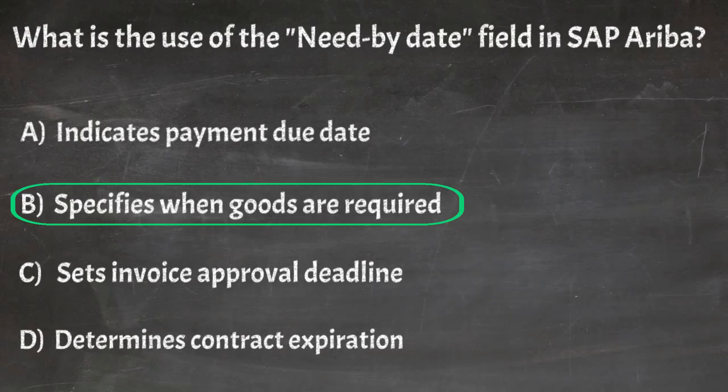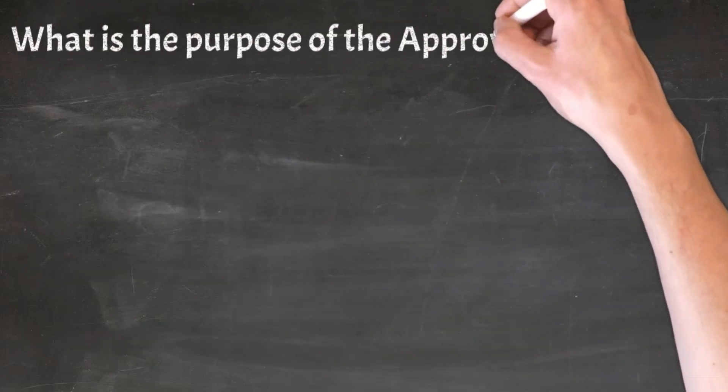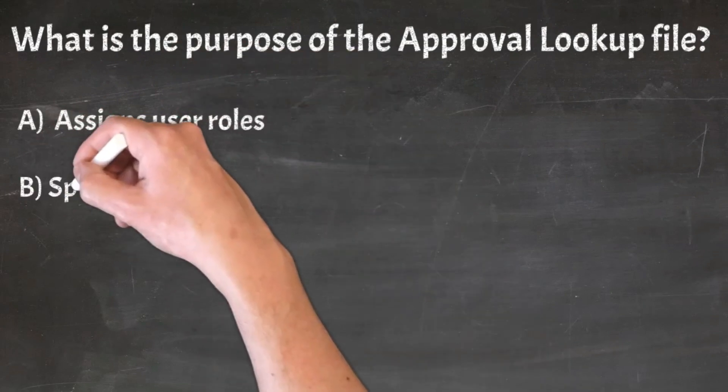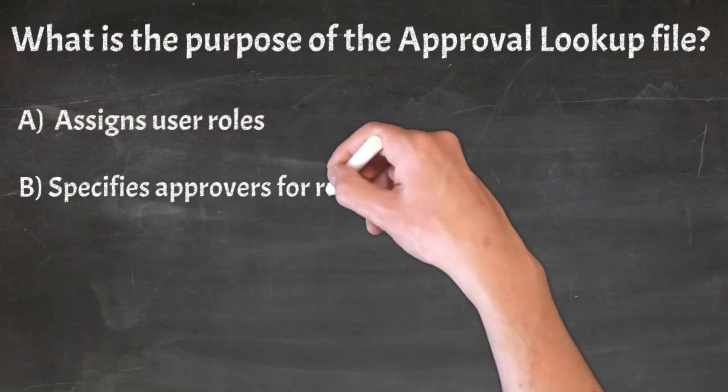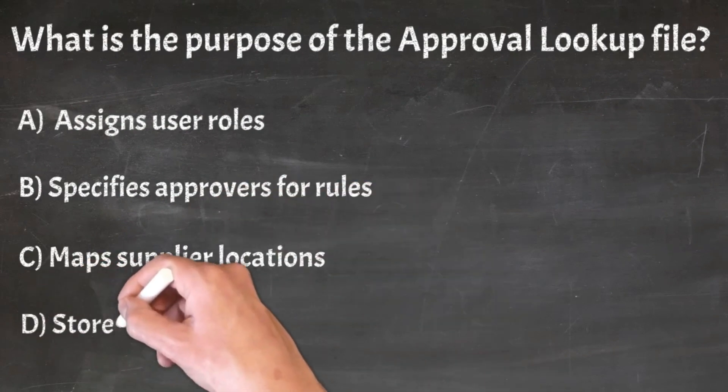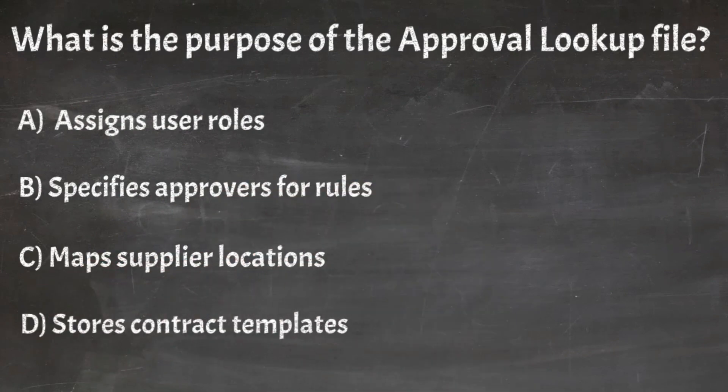Correct answer: B. Specifies when goods are required. Question 20: What is the purpose of the approval lookup file? A. Assigns user roles, B. Specifies approvers for rules, C. Maps supplier locations, D. Stores contract templates.